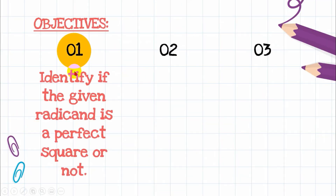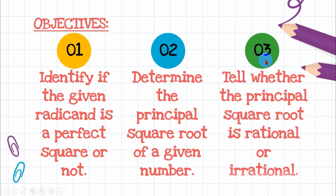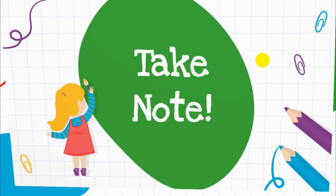Our objectives are: objective number one, identify if the given radicand is a perfect square or not a perfect square; objective number two, determine the principal square root of a given number; and objective number three, tell whether the principal square root is rational or irrational.